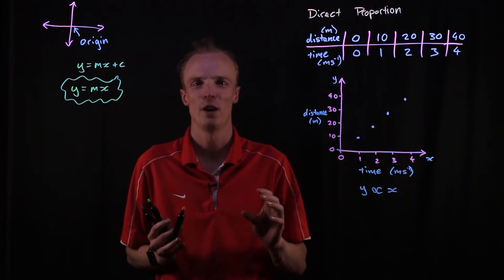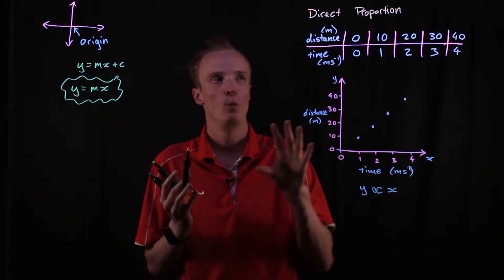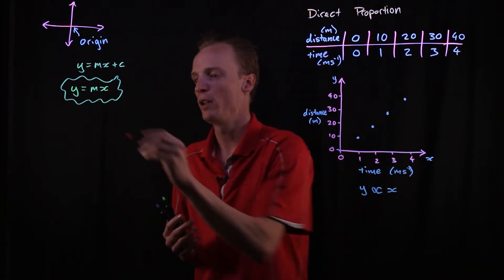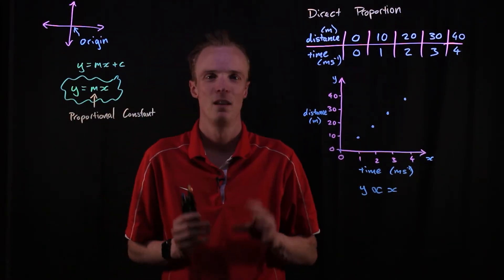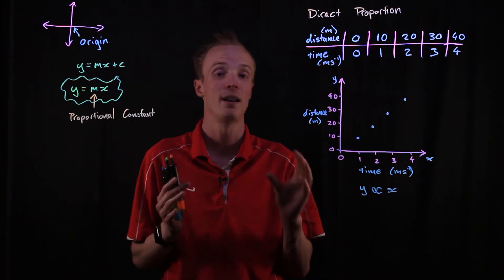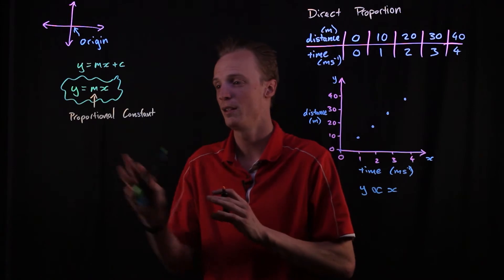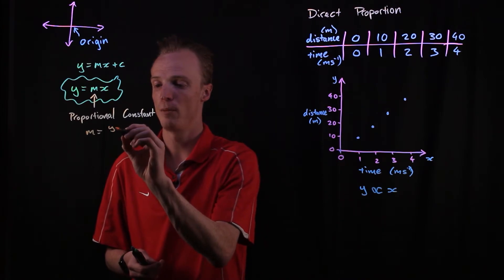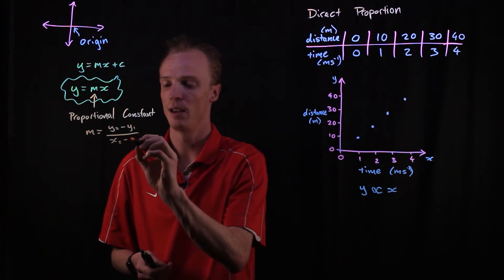In our problem, if it's in direct proportion, we know the line cuts the y-axis at the origin, which means c is equal to zero. So when things are directly proportional, the equation becomes y = mx. Rather than referring to m as the slope or gradient — which it is — when it's in direct proportion, we give this slope a new name: we call it the proportionality constant.